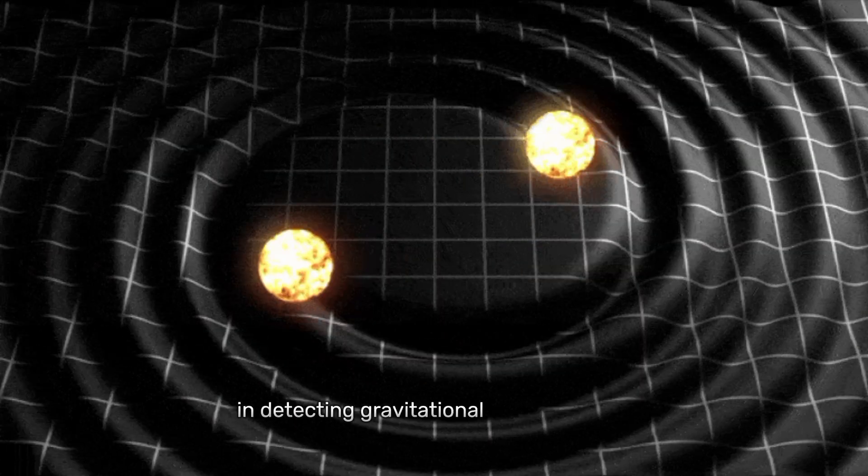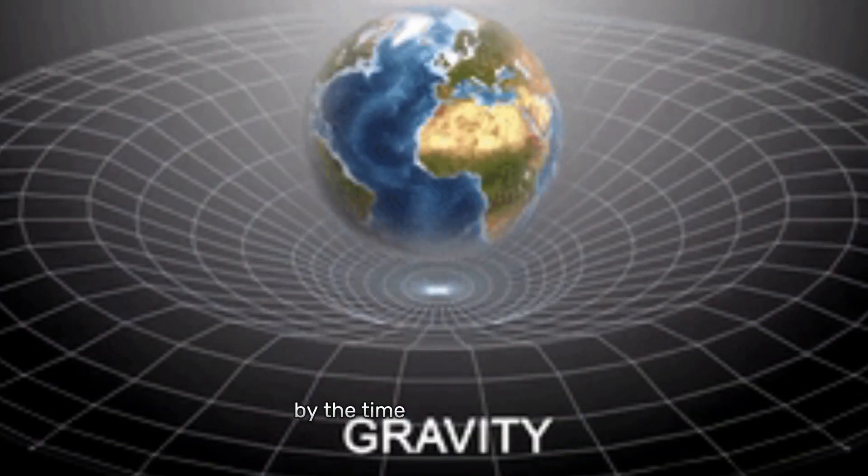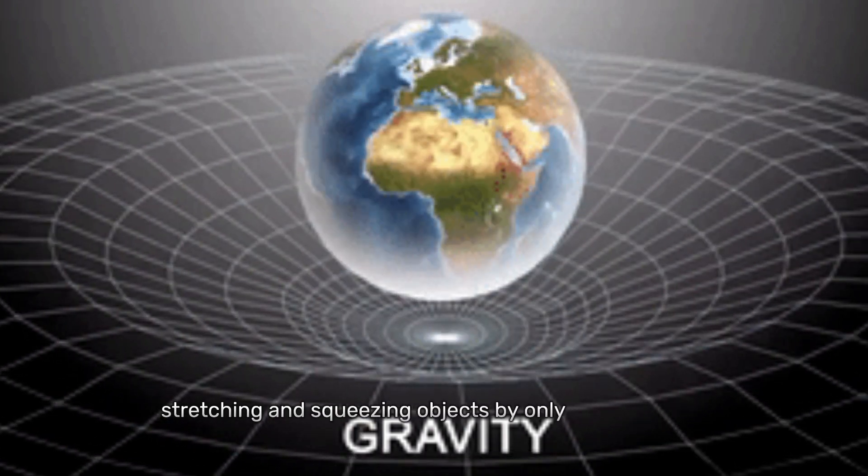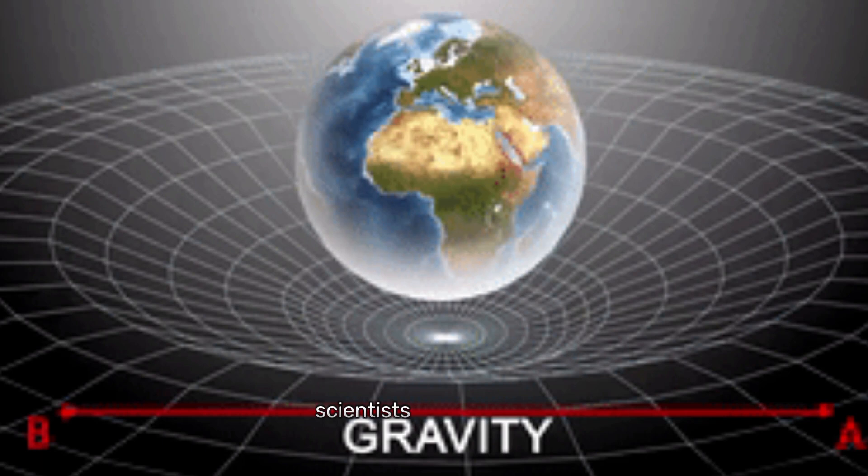One of the main challenges in detecting gravitational waves is their incredible weakness. By the time they reach Earth, the waves are incredibly small, stretching and squeezing objects by only a tiny amount. To detect these small changes, scientists use incredibly sensitive instruments called interferometers.